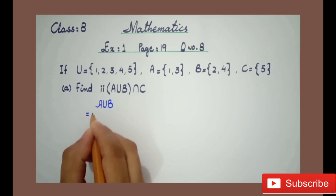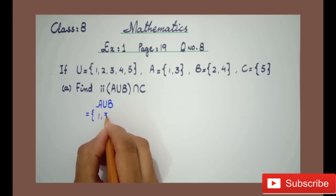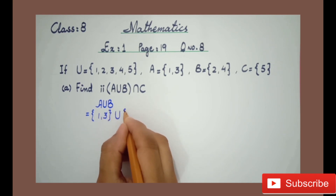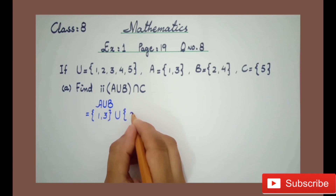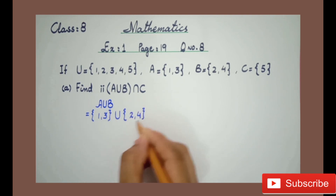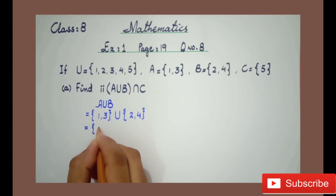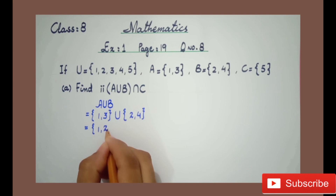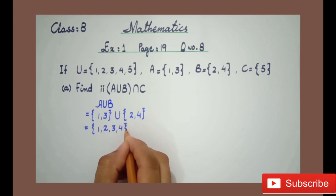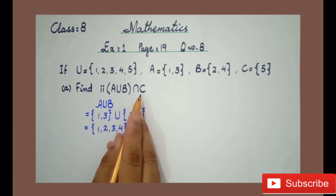Set A is {1, 3}, union set B which is {2, 4}. And A union B is {1, 2, 3, 4}.